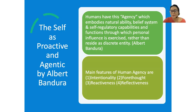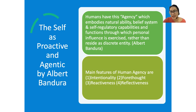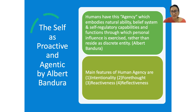For Albert Bandura, his idea about the self is agentic — the person is embodied with natural ability, belief systems, and regulatory capabilities so that he could exercise them to reach his goals. He advocates that humans as agents of action should undergo intentionality, forethought, reactiveness, and reflectiveness so they could reach their goals. We will discuss this further in unit three, managing and caring for the self.